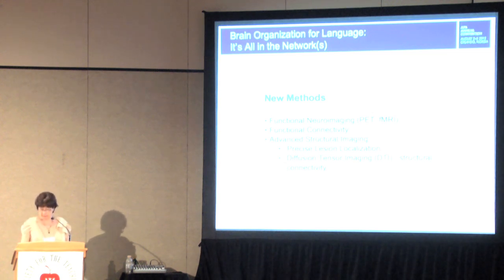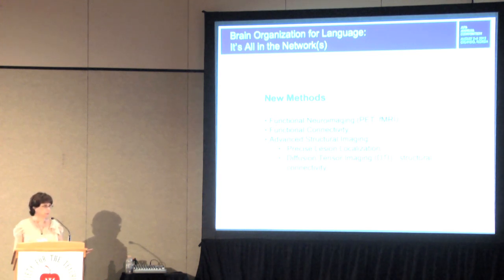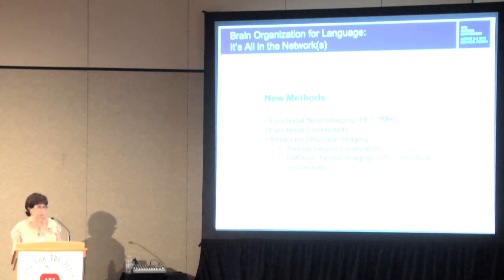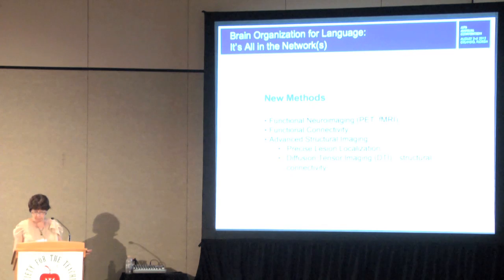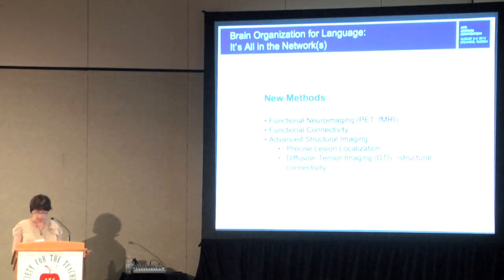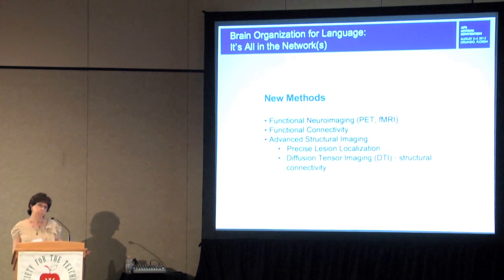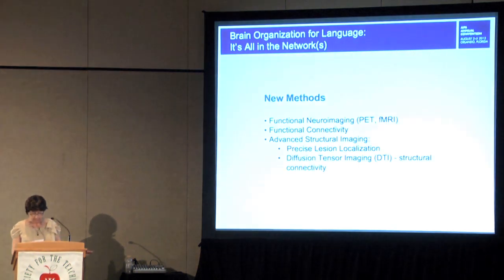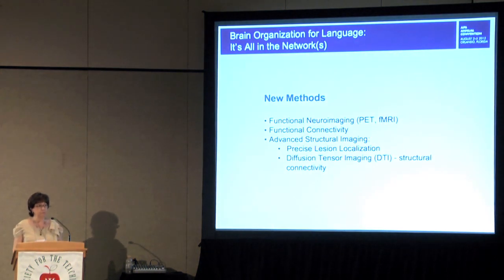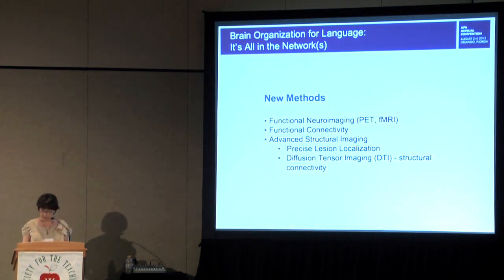Functional neuroimaging techniques such as fMRI and PET have allowed us to observe brain activity in areas that are active as participants actually use language. Using functional connectivity analyses, we can track the conjoint activation of several different brain regions in both healthy people as well as in those with injured brains. Advanced structural imaging techniques using high resolution fMRI allow us to more precisely measure lesion localization after brain injury. And using DTI — diffusion tensor imaging — we can image structural connectivity along white matter pathways that connect language-relevant brain regions.